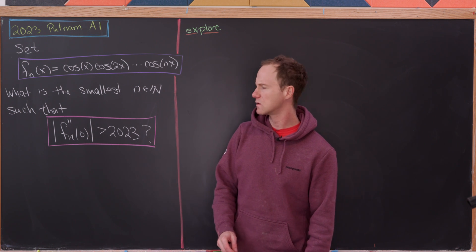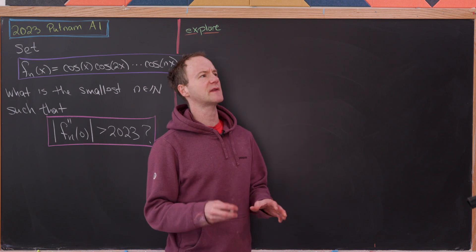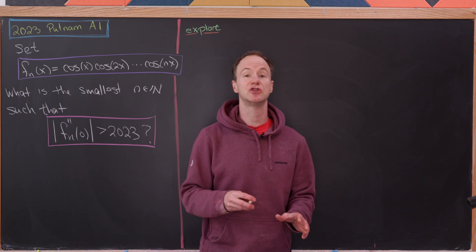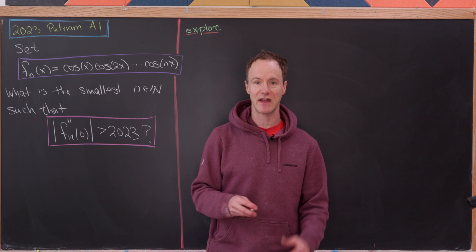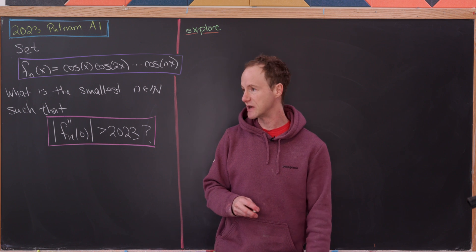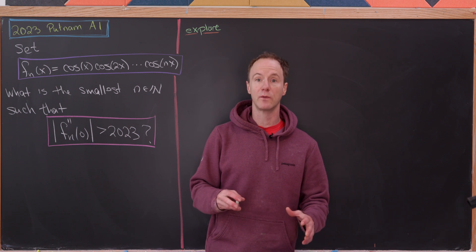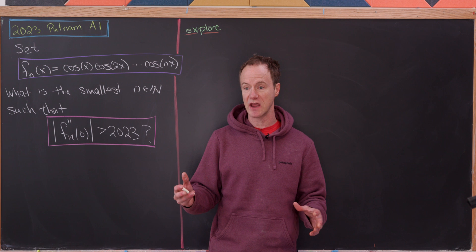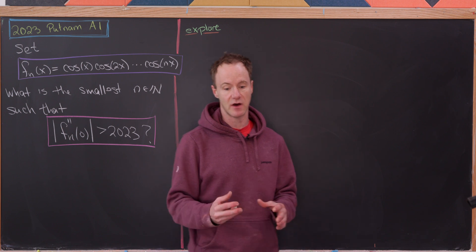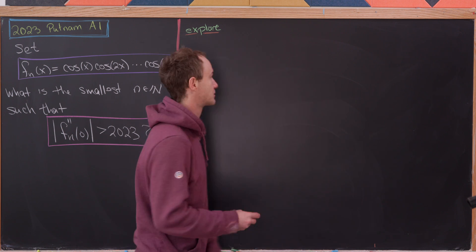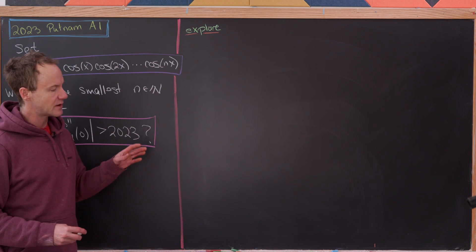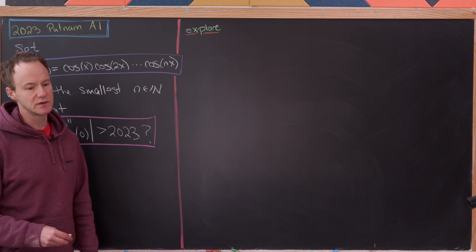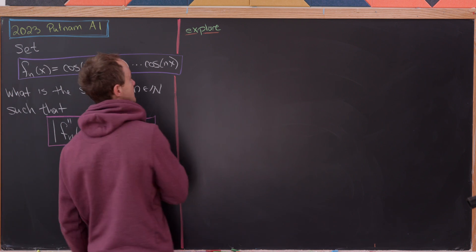Let's prove something a little more general — not because it's strictly necessary, but just to take advantage of the situation. We'll prove some sort of general shape for the second derivative of a large product. But in order to get our heads around this, let's do a little bit of exploration first.